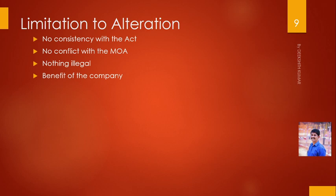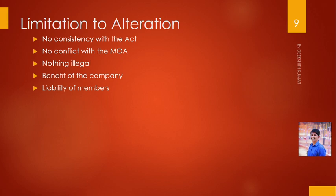Benefit of the company — if you are making an alteration in the articles of association, the benefit must not be concentrated on any particular member or category of shareholders or any key personnel. Any alteration must be for the benefit of the company as a whole. Liability of the members — the alteration must not in any way increase the liability of the existing members to contribute to the share capital or otherwise pay money. The liability is fixed in the memorandum of association.